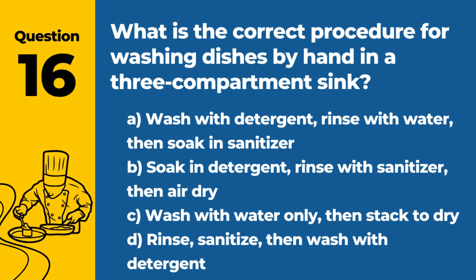Question 16. What is the correct procedure for washing dishes by hand in a three-compartment sink? The answer is A: Wash with detergent, rinse with water, then soak in sanitizer. This procedure ensures dishes are clean and free from harmful bacteria.